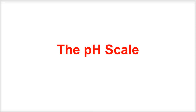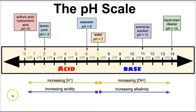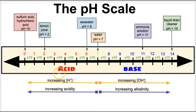Hey you guys, this is Mr. Millings, and today we're going to talk about the pH scale, or the pondus hydrogenae scale in Latin, or the power of hydrogen scale. The pH scale is a scale that represents the amount of hydrogen ions that are floating around in an aqueous solution.